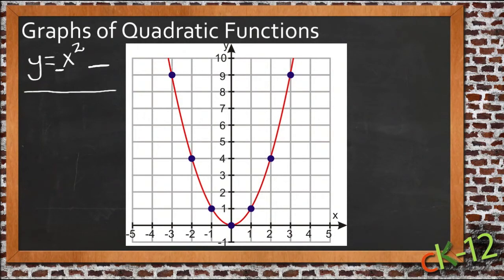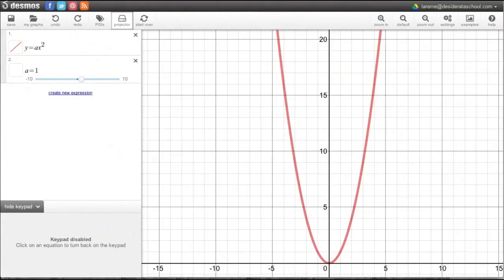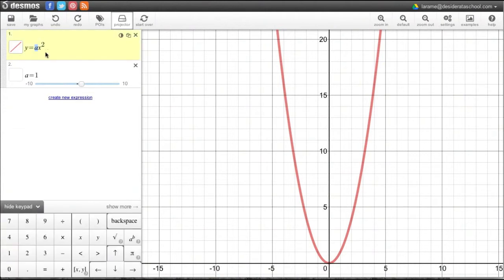What we're going to do is look at a number of different parabolas using the online Desmos graphing calculator here. All I've done is take the basic formula, y equals x squared, and I put another variable in front of it, a. And that a, then, I told the Desmos calculator to make as a slider.